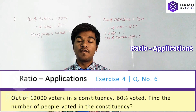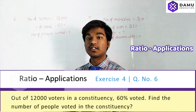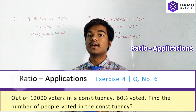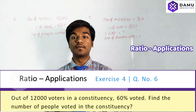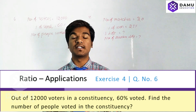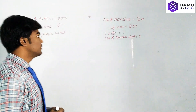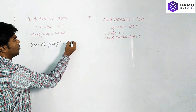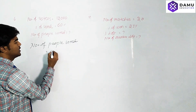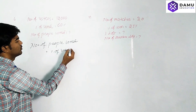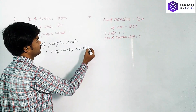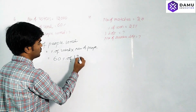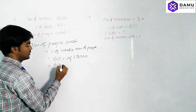In one constituency, there are 12,000 voters. 60% of the people voted. We have to calculate how many people voted. Number of people who voted is equal to 60% of the total voters — that is 60% of 12,000.